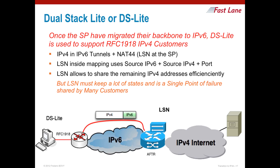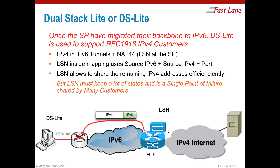Once a service provider has completed its migration to IPv6, it may still need to support IPv4 customers. One solution is DS Lite. With DS Lite, traffic from the customer is tunneled and encapsulated within IPv6 to the service provider. When it arrives, it is decapsulated and the private address is translated to a public address before being sent to the IPv4 internet. Because NAT is performed by the service provider, the same IPv4 public address can be shared by many customers.